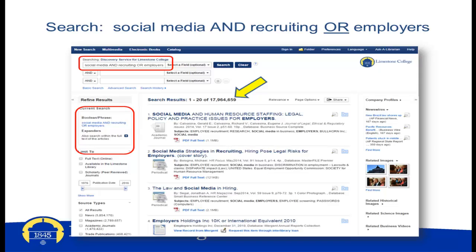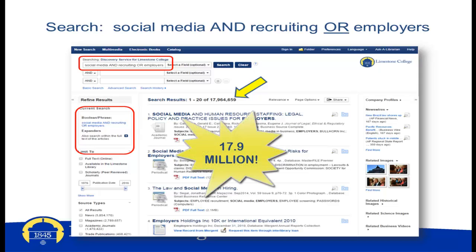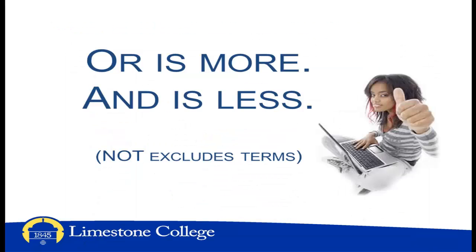Executing a second search, we changed one of our Boolean operators. We now have searched for social media AND recruiting OR employers. Although our keywords stayed the same, the operators determining the relationship between those words changed. You can see that we have more results now: 17,964,659. Remember the phrase: OR is more, AND is less. NOT excludes terms.